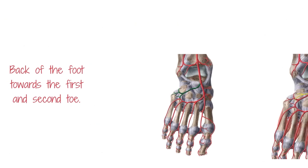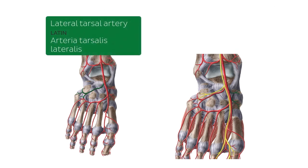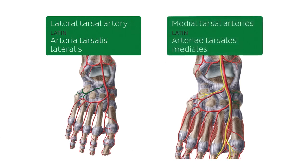The next arteries we're going to be talking about are seen here highlighted in green. On the image on the left side we're looking at the lateral tarsal artery, and on the image on the right side we're looking at the medial tarsal arteries. Keep in mind that on these images we're looking at the dorsum of the foot — this is not the plantar view or plantar side of your foot.